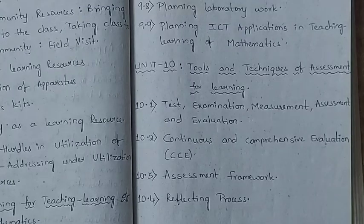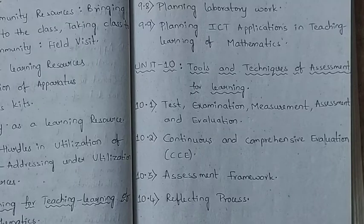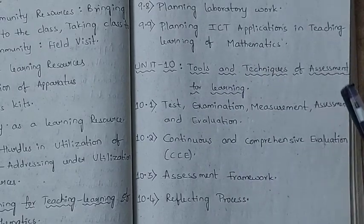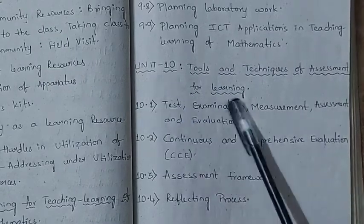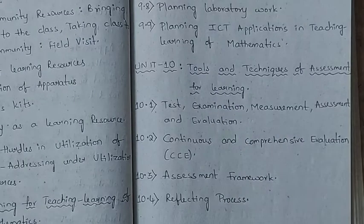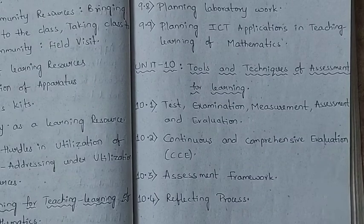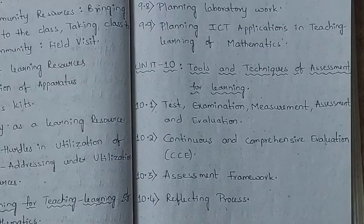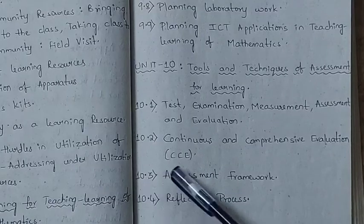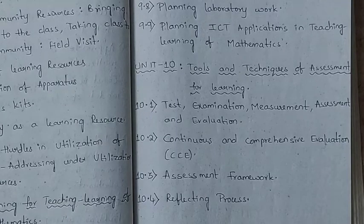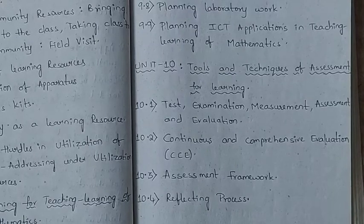Unit 9 is complete with 9 subtopics, and unit 8 had 7 subtopics. After planning teaching learning, assessment is needed. In unit 10 we look at tools and techniques — measurement, assessment, and evaluation — and the differences between them, and between test and examination. In 10.1 we look at these differences. In 10.2, the most important topic, is CCE — Continuous and Comprehensive Evaluation — which has compulsory questions in every teaching exam. In 10.3 is the assessment framework, and in 10.4 is the reflecting process, which teachers must always practice.